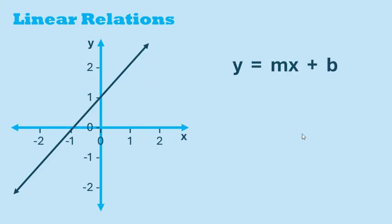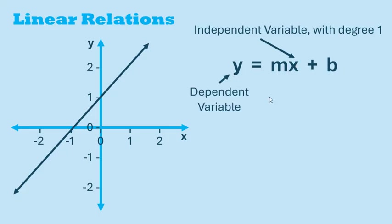This line can be represented by an equation relating x and y. x is the independent variable. This means we can choose different values of x and put them into this equation to get the corresponding y values. Notice that x always has exponent 1 in linear relations. y is the dependent variable. It depends on which values of x we've input into the equation.